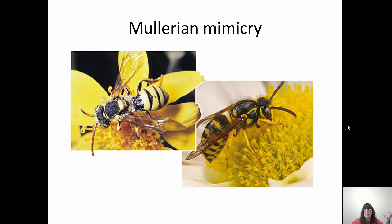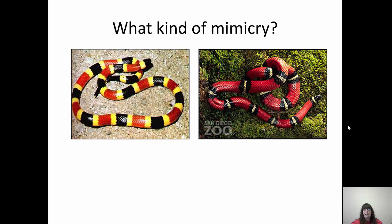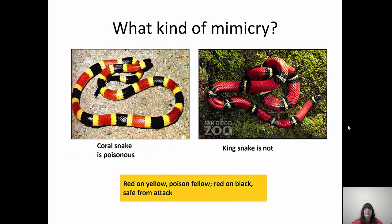Mullerian mimicry — safety in numbers — involves black and yellow striped insects that all look alike and can avoid predation. Warning coloration is also called aposematic coloration, where aposematic species come to resemble each other with bright oranges, blacks, yellows, and whites associated with poisonous species. So what kind of mimicry is a king snake mimicking a coral snake? It is Batesian — the coral snake is poisonous and the king snake is not. Red on yellow, poison fellow; red on black, safe from attack.